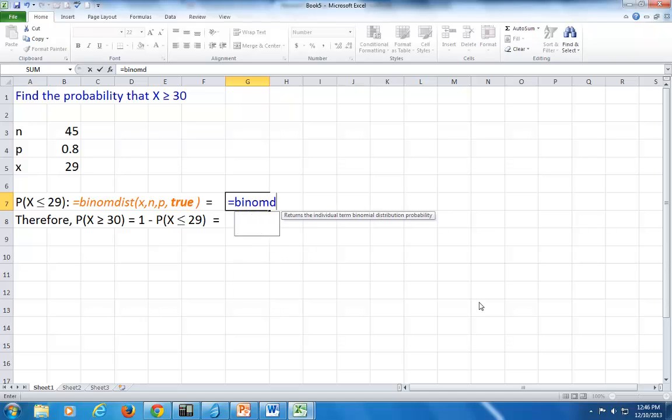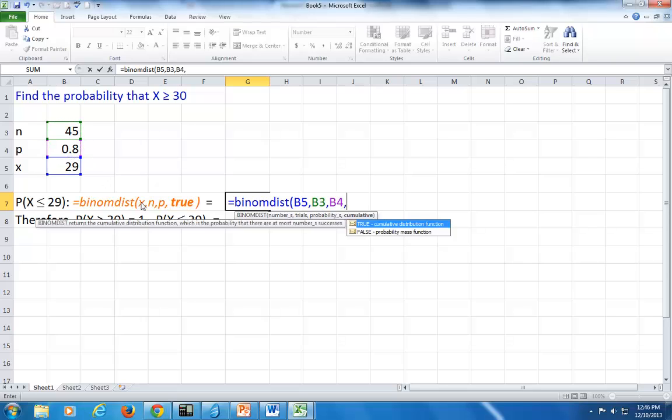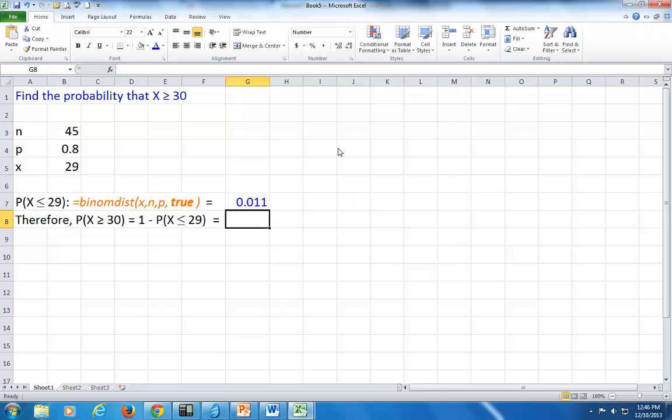All right, binomdist, that's it right here. It prompts you for number of successes, which is x. You click there, comma, number of trials, which is your sample size, and then probability of success, which is this. And then type true to get the cumulative probability, meaning up to 29.